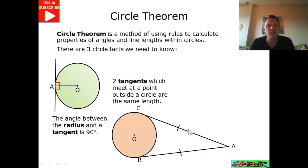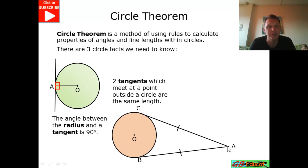If we've got two tangents coming away from the circle — touching the outside of the circumference of the circle and meeting at a point — then these two tangents are going to be equal in length.